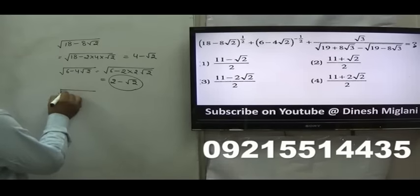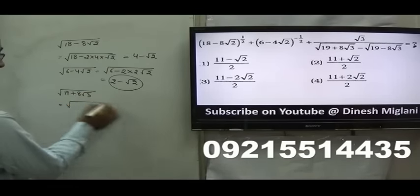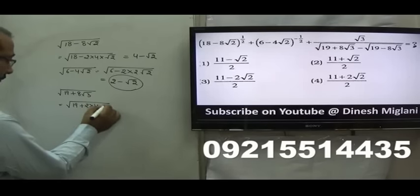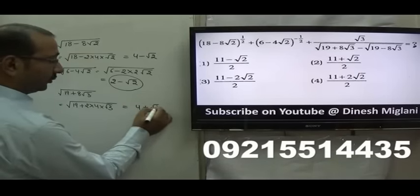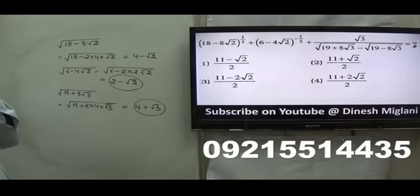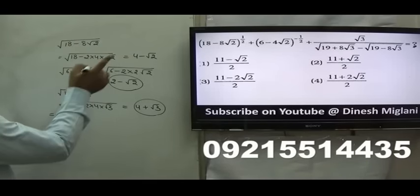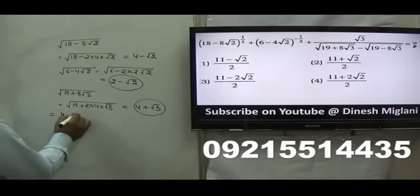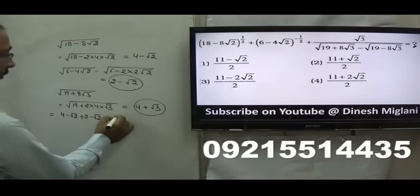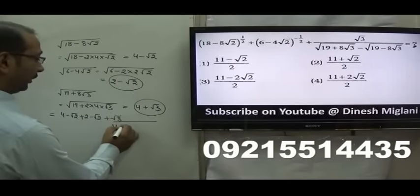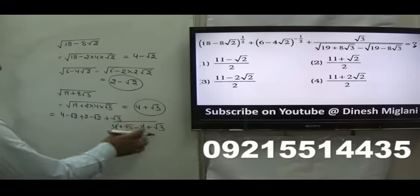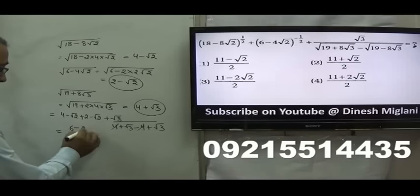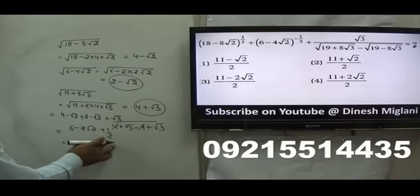Then, for √(19 + 8√3): I take it as √(19 + 2·4·√3). Here 4² = 16 and (√3)² = 3, so 16 + 3 = 19. That is 4 + √3. And √(19 − 8√3) is 4 − √3. Now putting all values into the equation: (4 − √2) + (2 − √2) + √3 in the numerator. In the denominator I get (4 + √3) − (4 − √3) = 2√3, which gives ½. So I get 6 − 2√2 + ½. Taking LCM 2: (12 + 1) = 13, giving (13 − 2√2)/2.